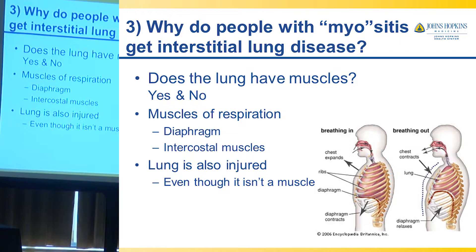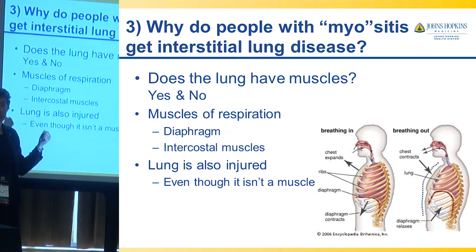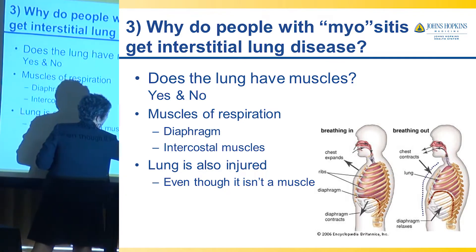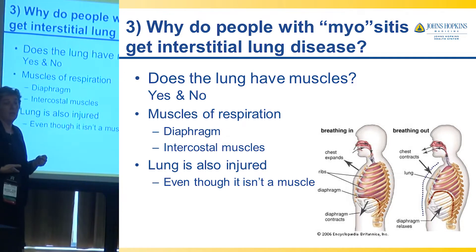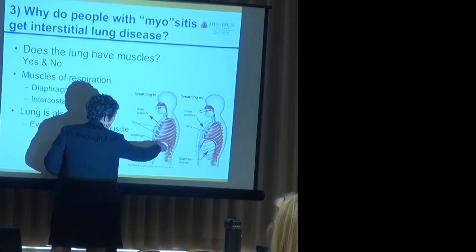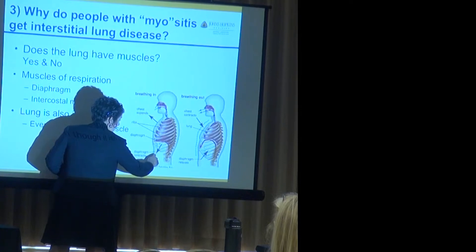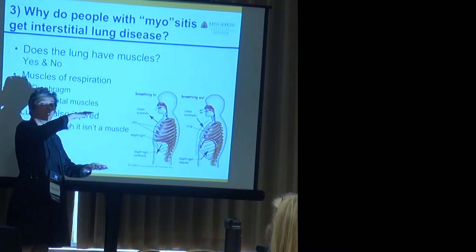There are very important muscles of respiration that can be affected by myositis in the same way that muscles you use to lift your arms and walk can be affected. The major muscle is the diaphragm, which separates the abdominal contents from the lungs. Every time you breathe, your body contracts that muscle — when it contracts, you breathe in; when it relaxes, you breathe out.